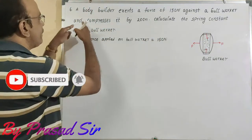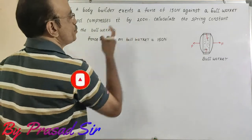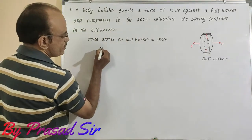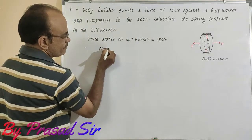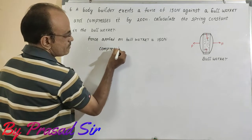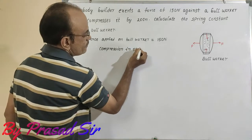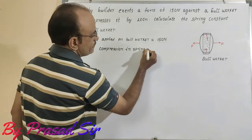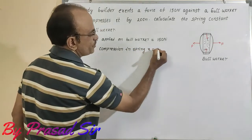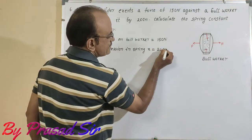Then afterwards what happens here? Spring compresses by 20 centimeters. Here compression in spring, that is x, is equal to 20 centimeters.